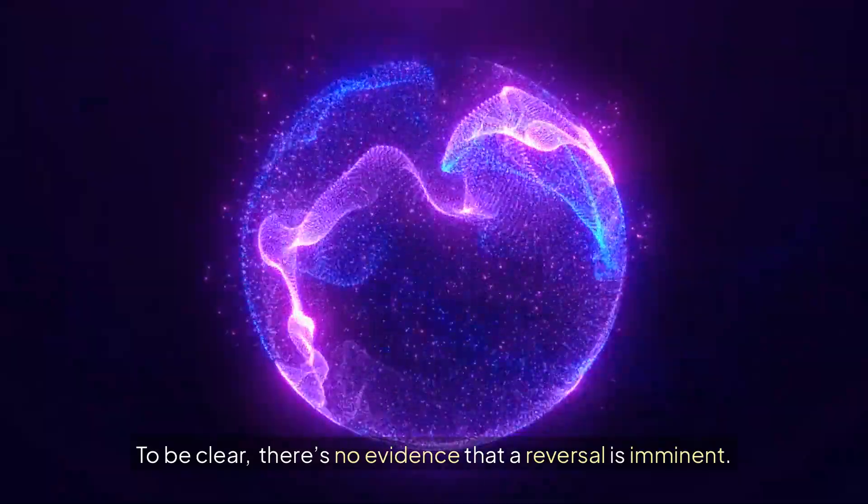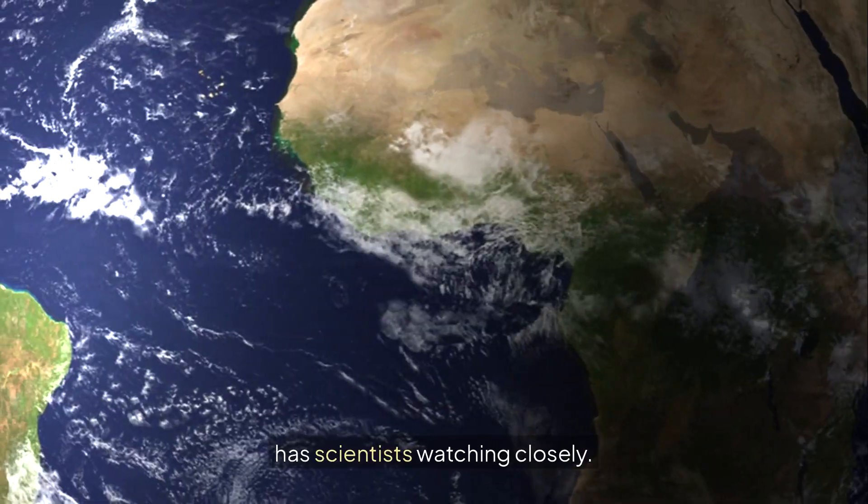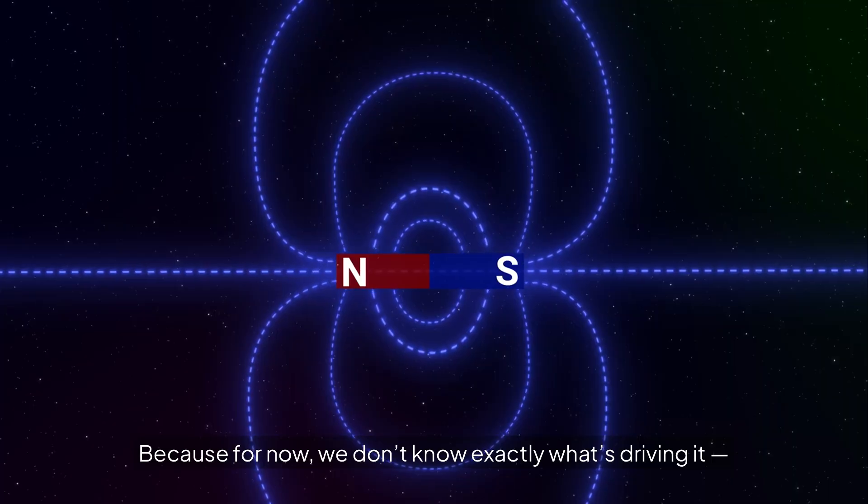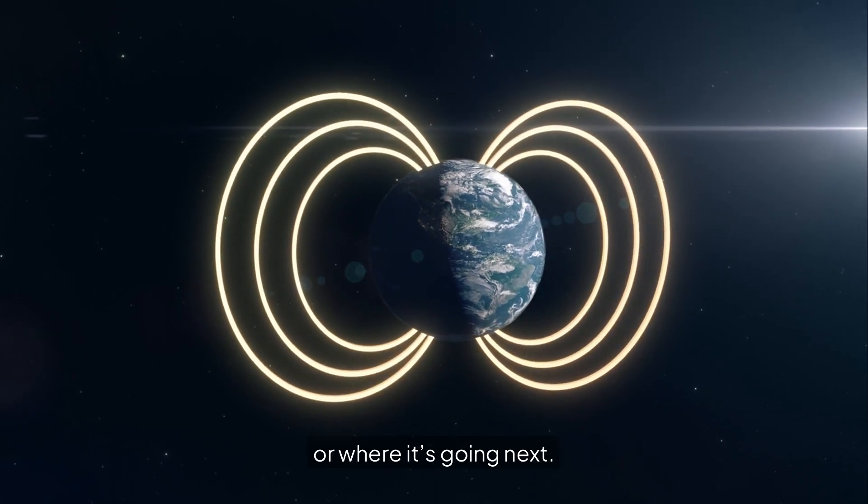To be clear, there's no evidence that a reversal is imminent. But the current speed of pole movement and weakening field strength has scientists watching closely. Because for now, we don't know exactly what's driving it, or where it's going next.